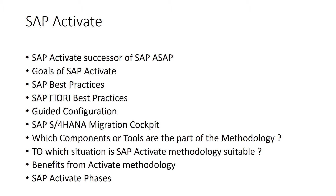SAP Activate is a new method for implementing SAP software, designed for the new SAP S/4HANA business solutions. It assists with new implementations — that is greenfield implementations — conversion of existing SAP Business Suite systems, and transformation of SAP landscapes. The SAP Activate approach includes best practices for business processes, guided configuration, and implementation methodology.